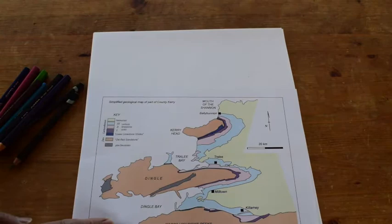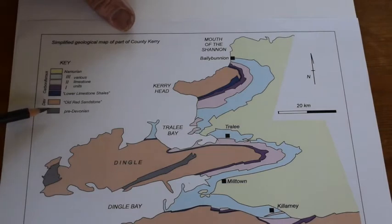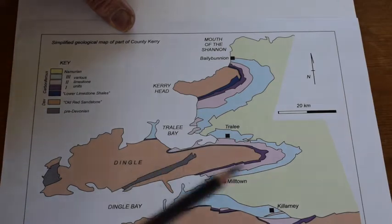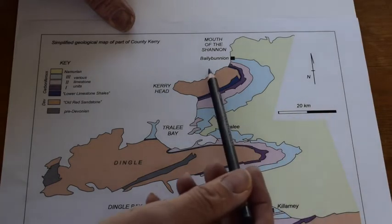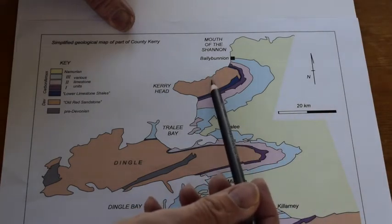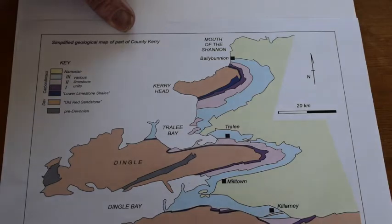Let's start with the key. We've got the oldest rocks here, pre-Devonian, going through Devonian into the top end of the Carboniferous. We can identify these places on the map. We've got Devonian old red sandstone rocks in this brown colour around Kerry Head and on the Dingle Peninsula and down here at McGillicuddy's Reeks.